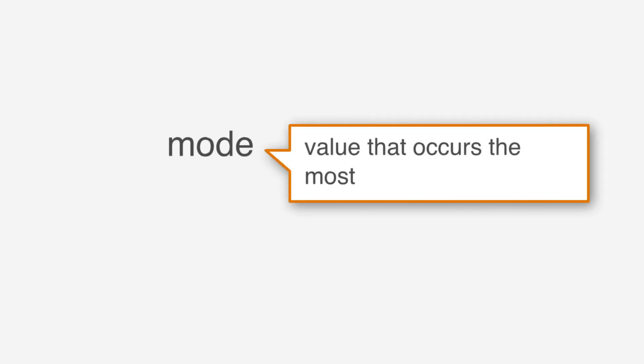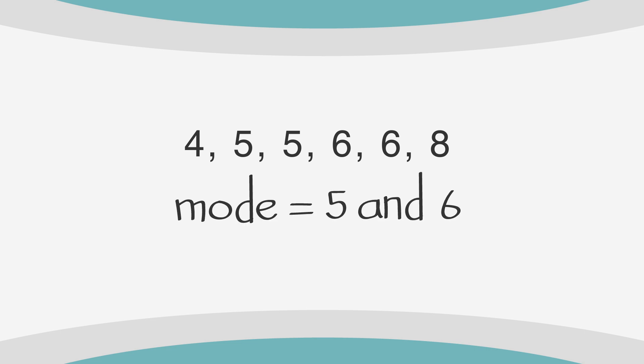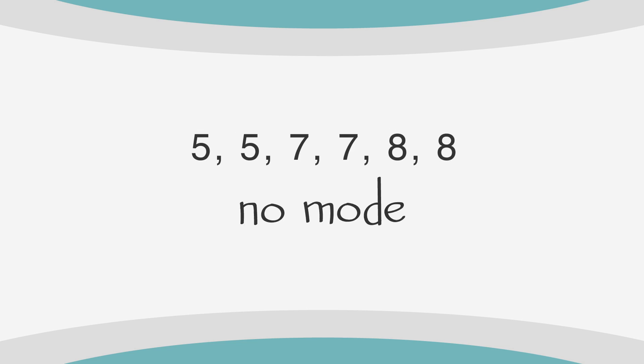The mode is the value that occurs the most. In this data set, the mode is 100, because it's the only number that occurs more than once. In another set, there is no mode, because no number occurs more often than any other. You can have more than one mode in a set — for example, the mode can be both 5 and 6. And in a set where all numbers occur equally, there is no mode.